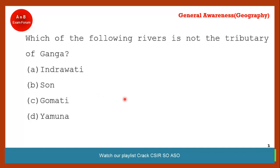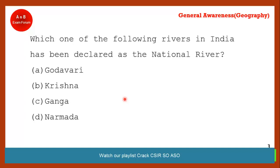Coming to the next question: which of the following rivers is not a tributary of Ganga? Option A is the correct answer — Indiravati. Indiravati is not a tributary of Ganga. Son, Gomti, and Yamuna are all tributaries of the Ganga river.